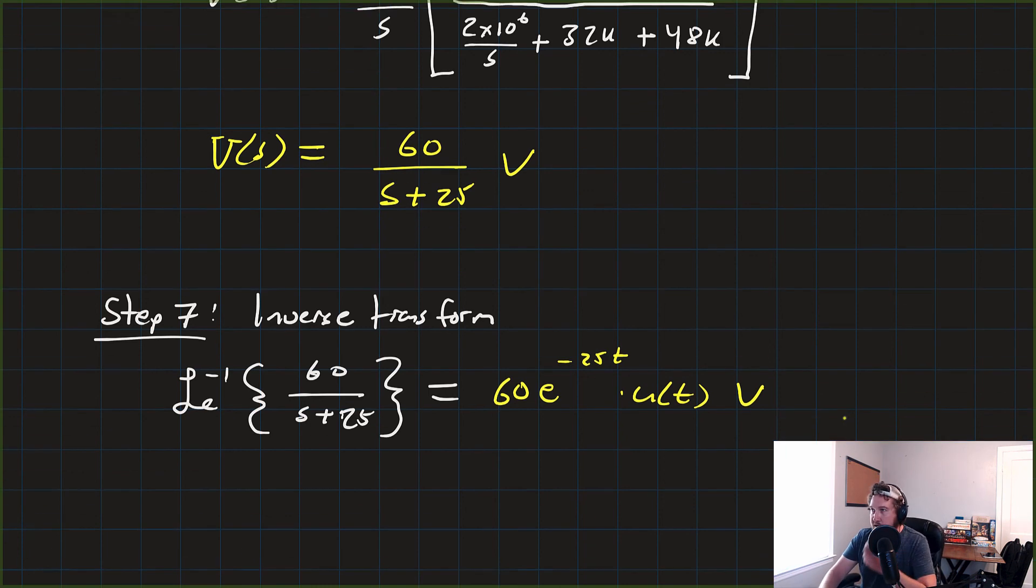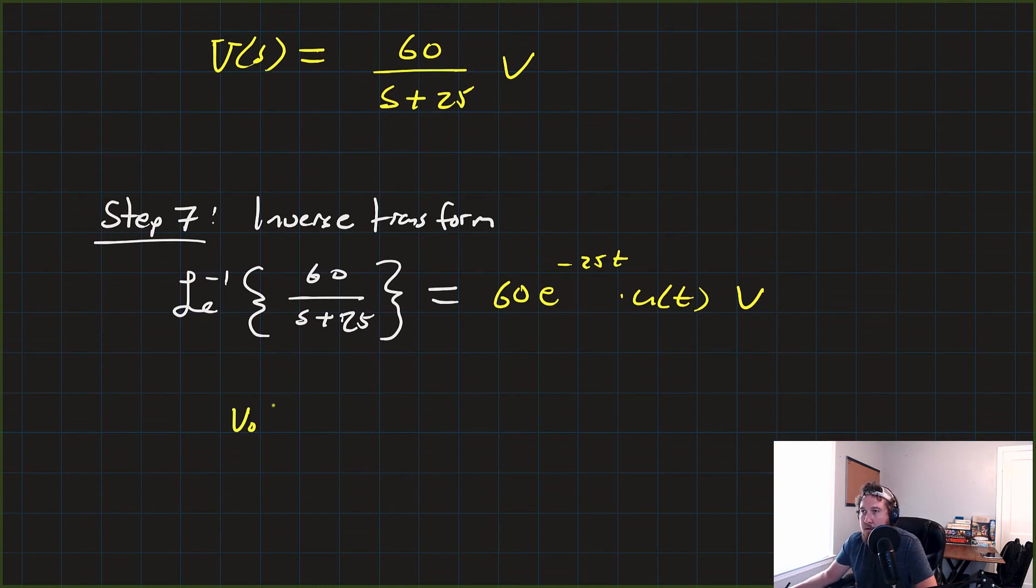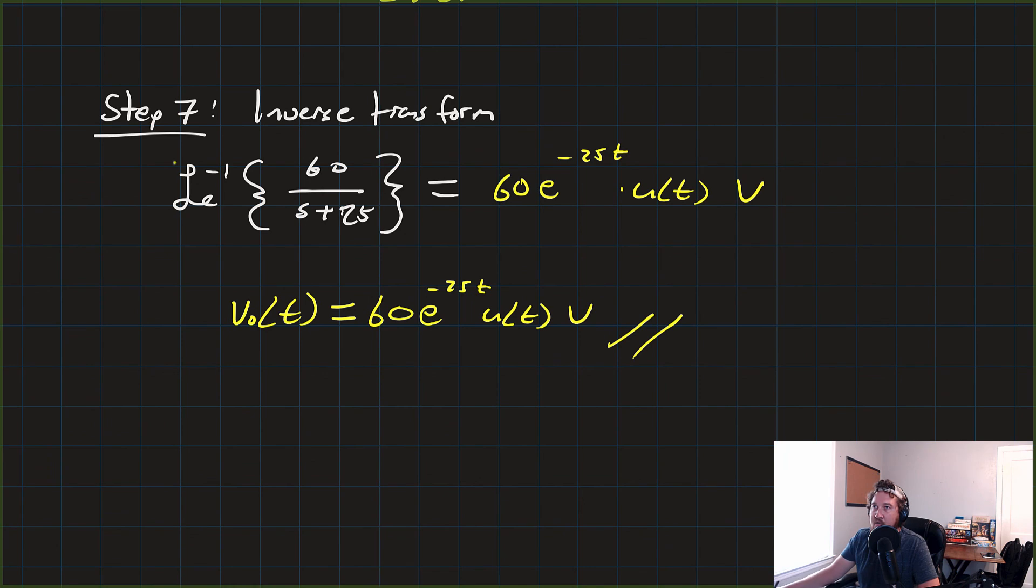So there we go. There's our answer, V-naught of T is equal to 60 times e to the minus 25t times U of T in volts. Now, we could just stop right there. There's our final answer. But we're going to go ahead and be judicious. And now we're going to throw back into step 6, which is to do a quick check using the initial and final value theorems.